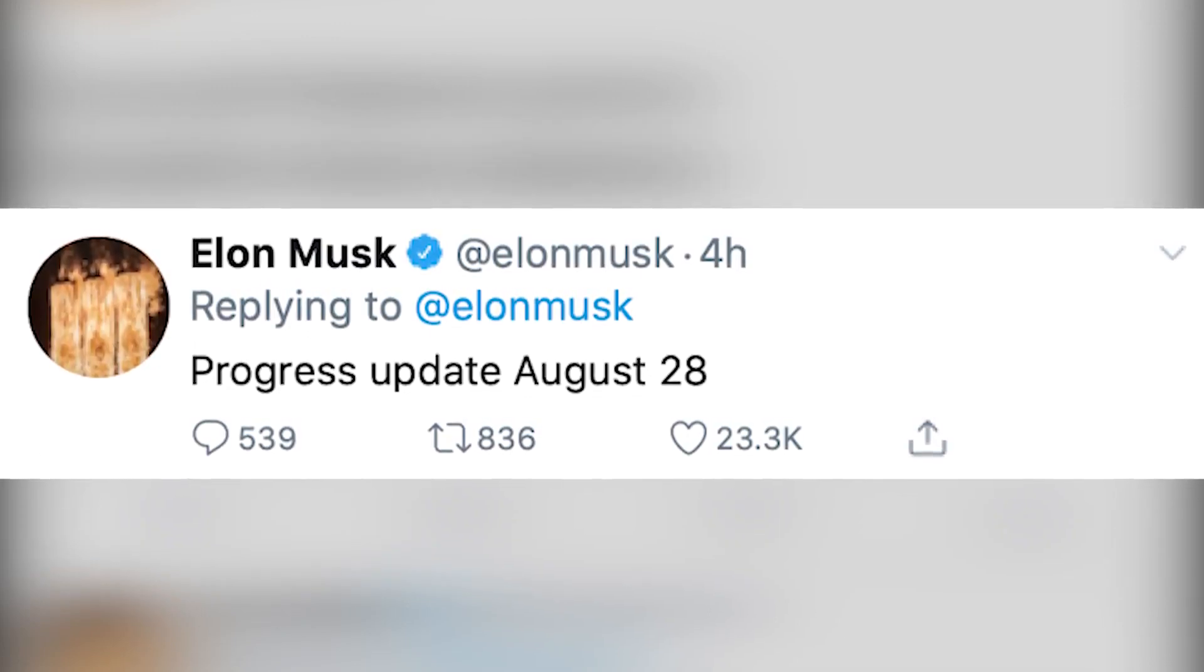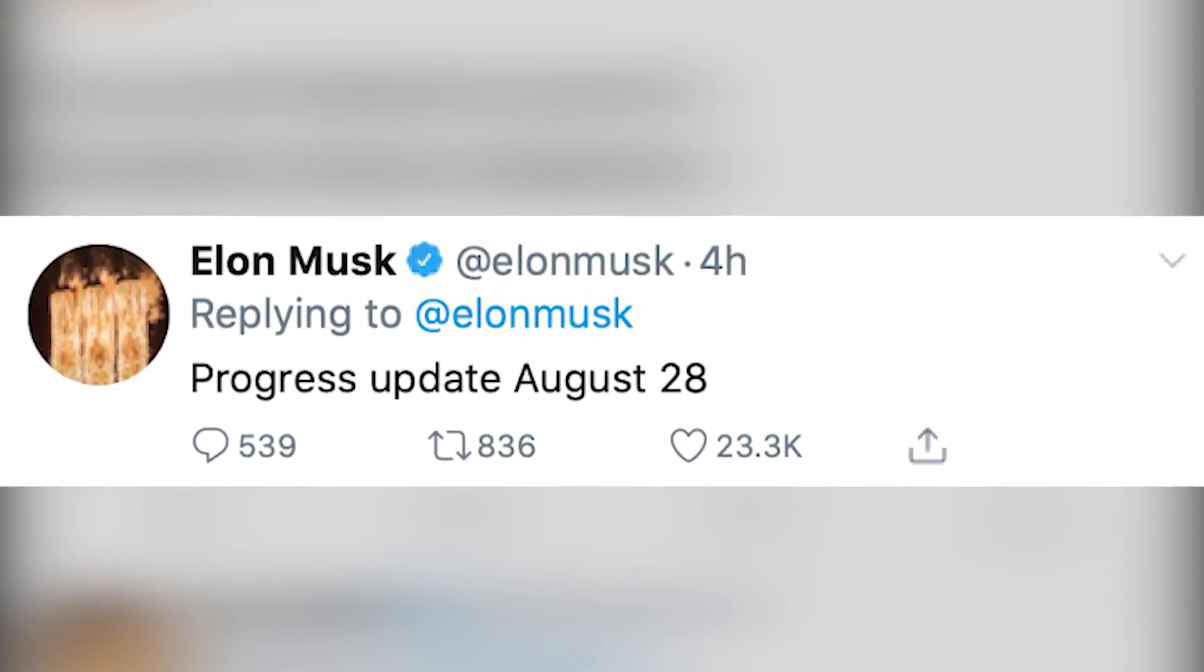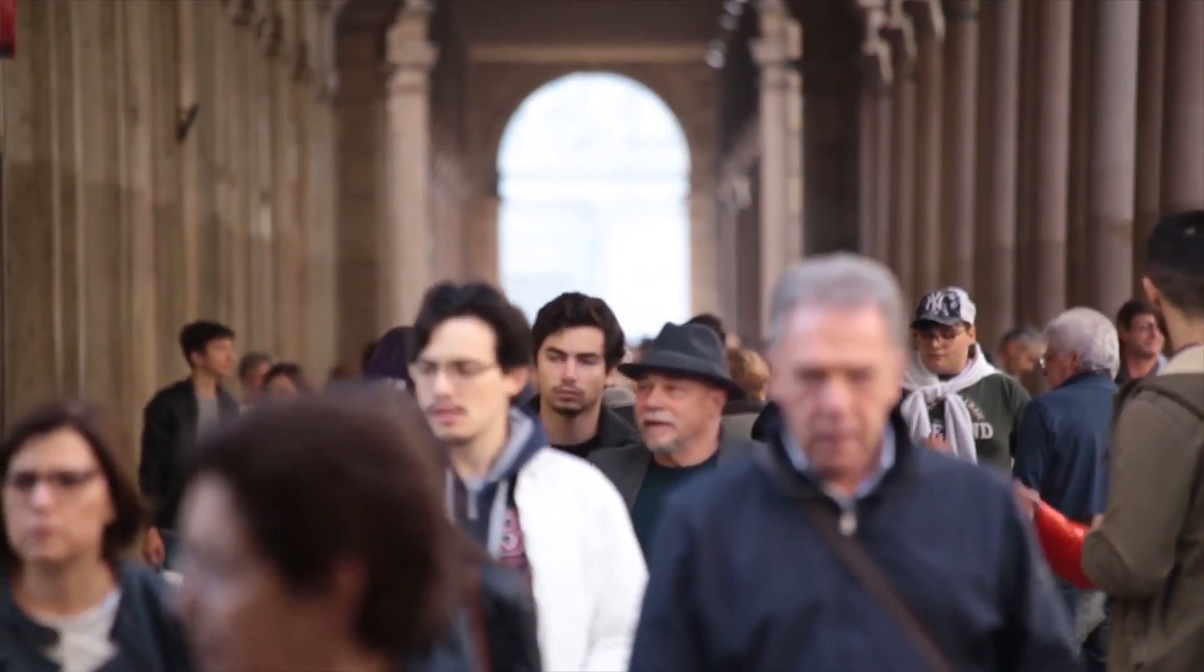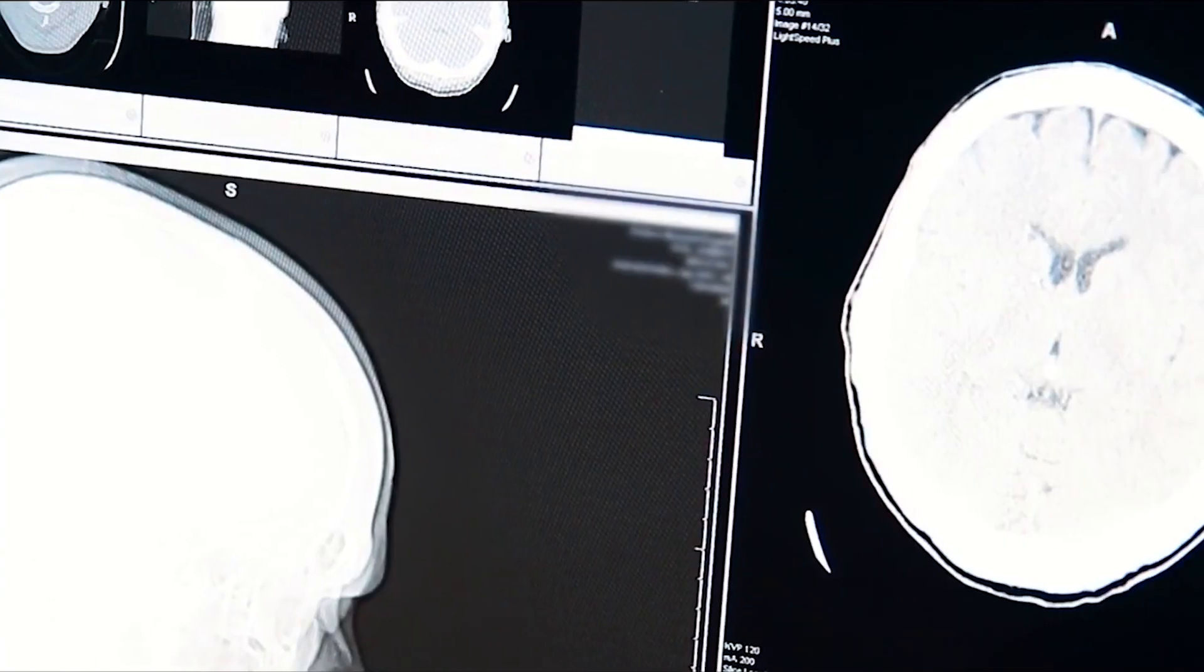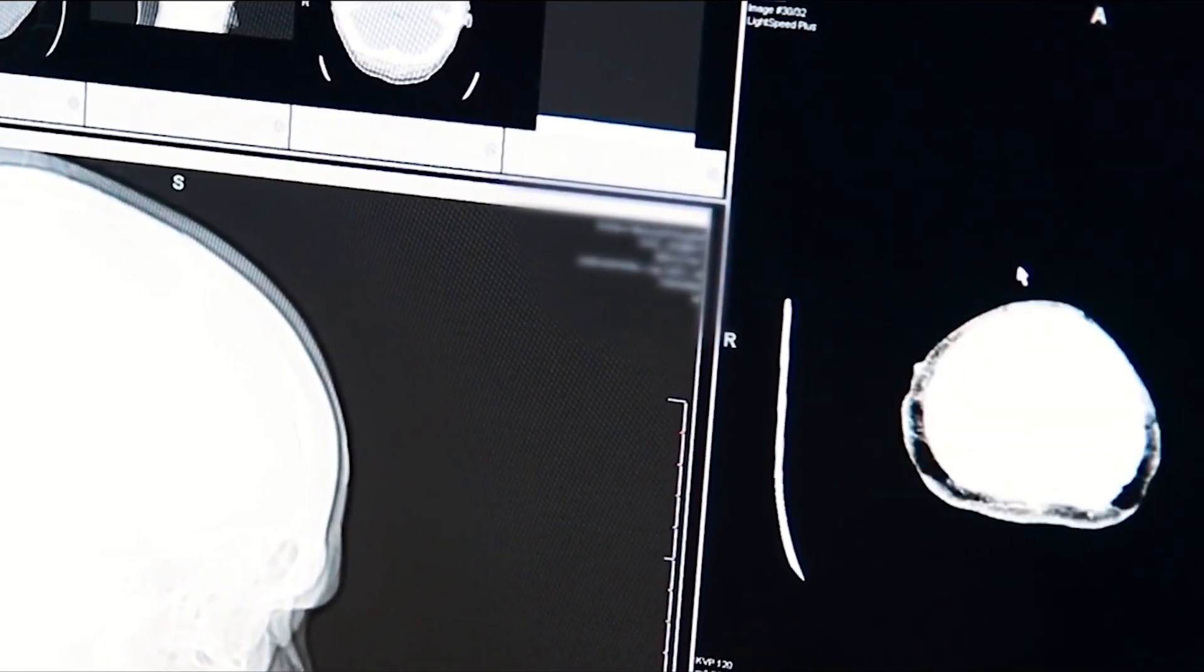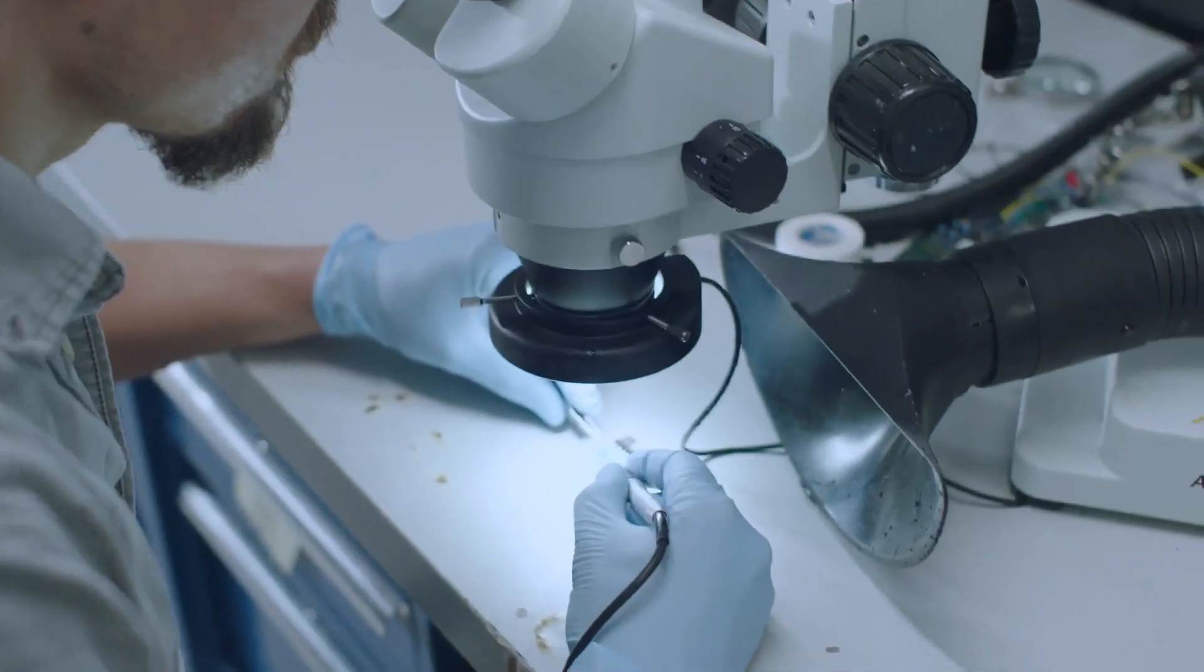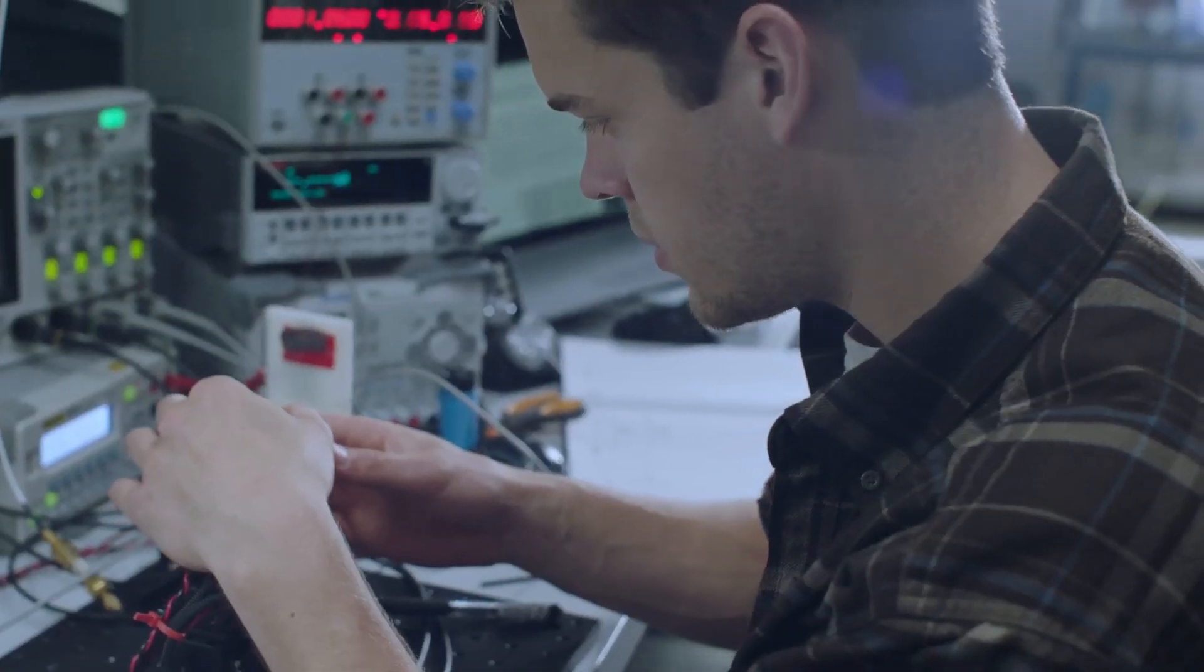The tweet was followed by another tweet, which stated: Progress Update, August 28th. The first tweet was in reference to his ambition of promoting humanity, and it meant if you cannot keep up with artificial intelligence, you can surely shake hands with it. The second tweet is a larger question now.